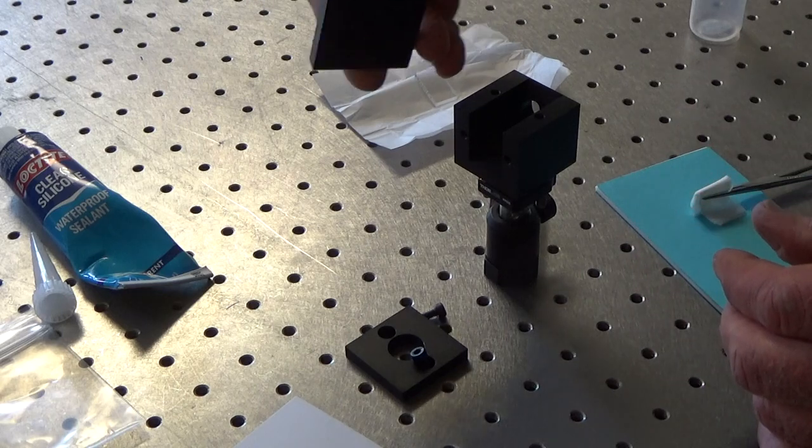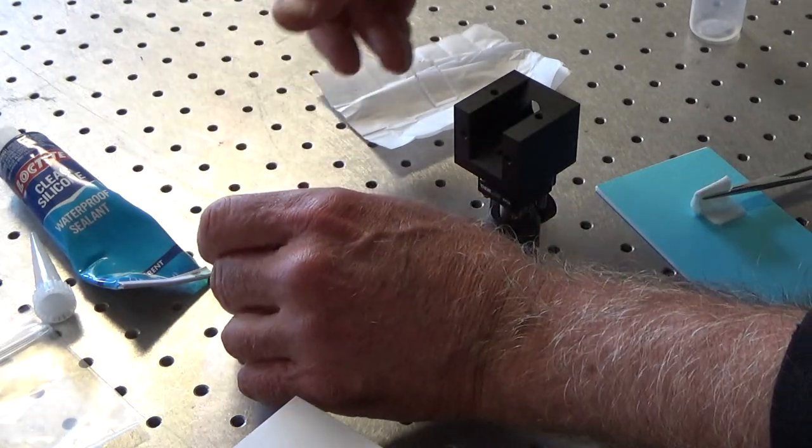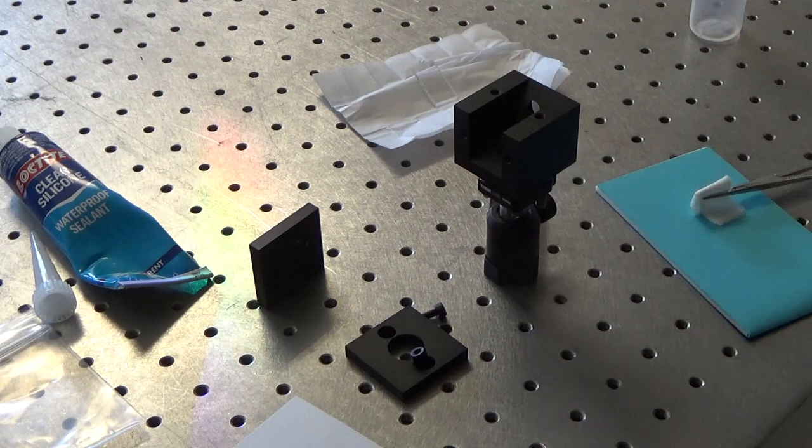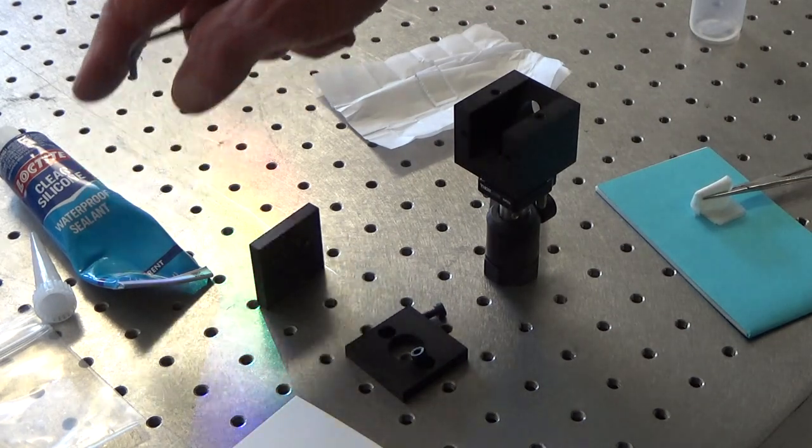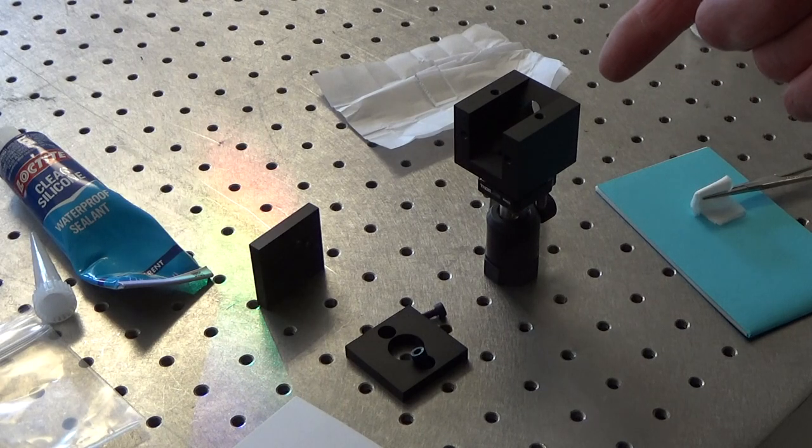There's a beam dump there. The thin film polarizer is held in place with four dabs of clear silicone, which is very easily removed.